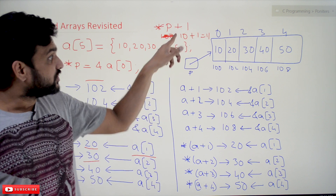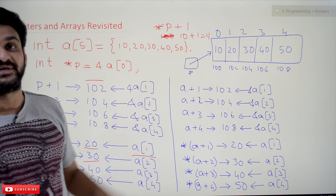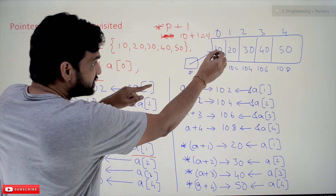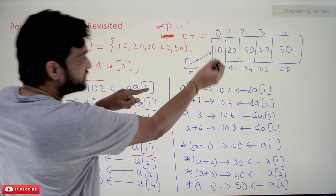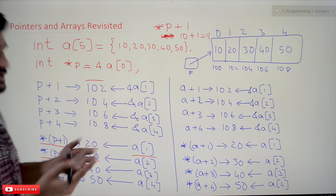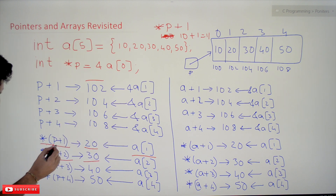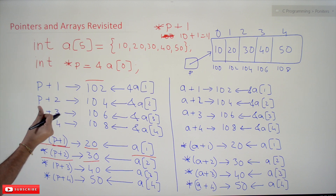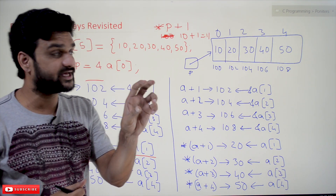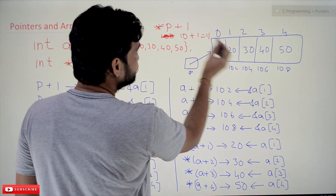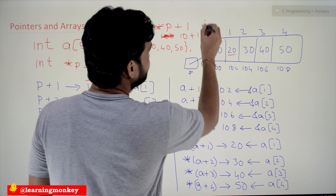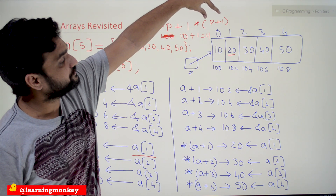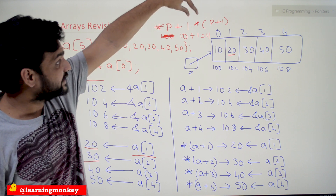But what we want is the value stored at P+1. Without parentheses, we have added 1 to the value at *P — P is pointing to 100, so *P is 10, and we get 10+1=11. What we actually want is the value stored at the memory location P+1, not the value at P incremented by 1. That is the importance of the operator precedence and associativity table.